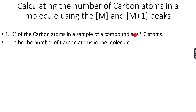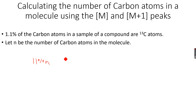We use the M and M+1 peaks. As stated, 1.1% of the carbon atoms in a sample of a compound are carbon-13 atoms. If there are n carbon atoms in the molecule, then 1.1% of n are carbon-13 atoms. The probability that there are carbon-13 atoms is 1.1% of n, which we write as 1.1 over 100 times n.